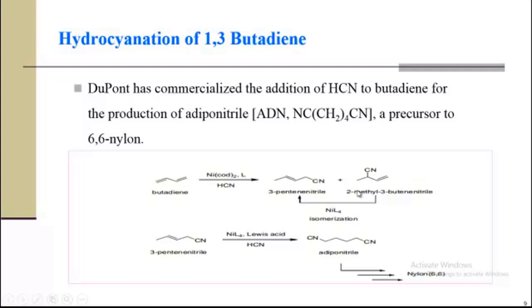Means we will get mixture of products. After that, nickel isomerizes this anti-Markovnikov product to Markovnikov product. 3-pentenenitrile will be treated in the presence of HCN, dicyanation, and we will get adiponitrile, which is the precursor to synthesize nylon 6,6.